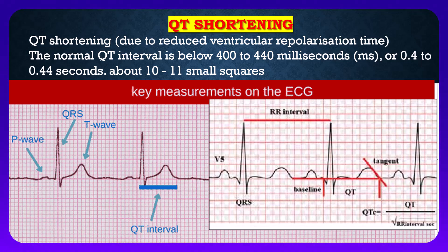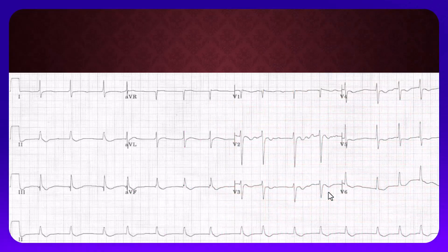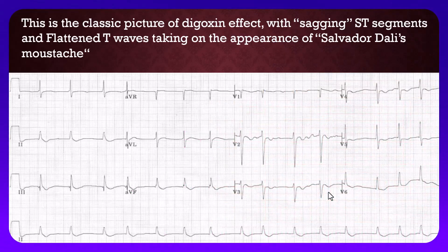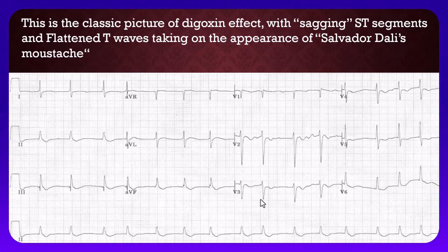With the sagging ST segment and flattened T wave taking on the appearance of Salvador Dalí's moustaches, here in these leads you can see depression of the ST segment, T wave flattening, and it resembles the Salvador Dalí moustaches. This is a typical example of digoxin effect.